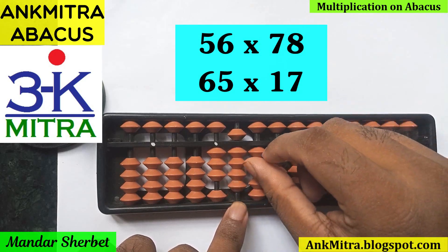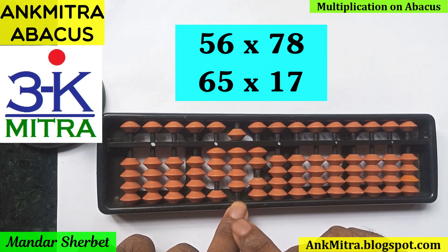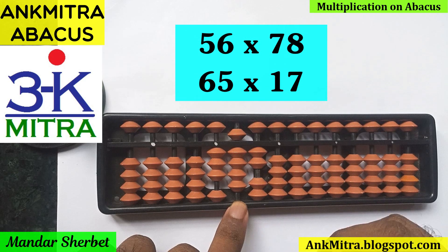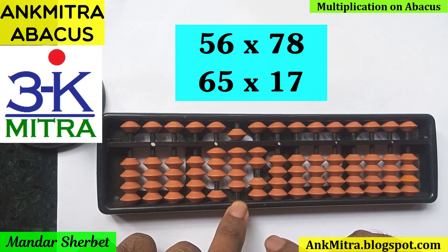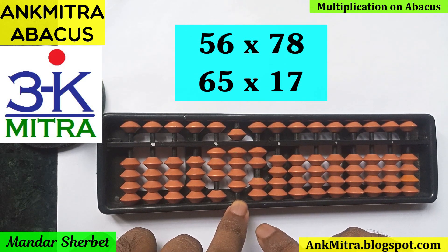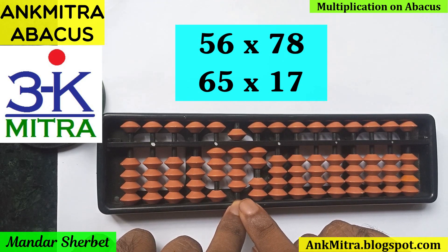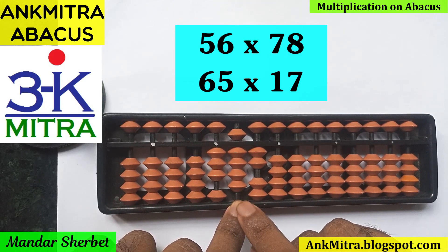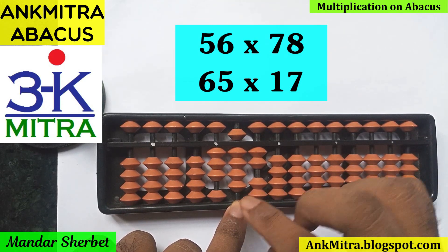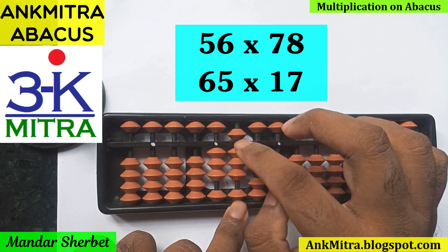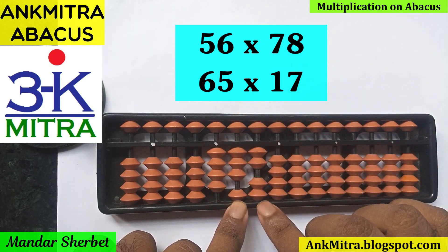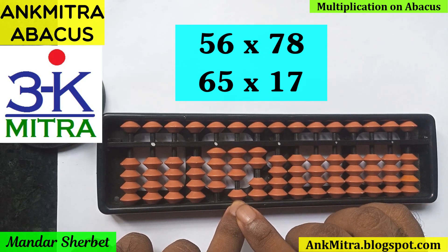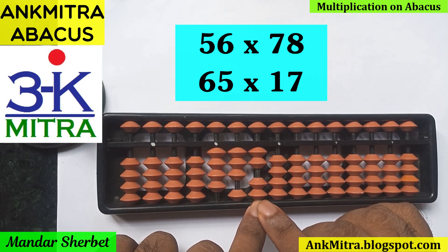The first part of the calculation is done. For the second part, the units place digit of 78 will be considered now. So 8 multiplied by 5 will start from this third rod. 8 multiplied by 5 is 40 — adding 4 on this rod will be done using minus 6 plus 10, and 0 to be added on this rod, so nothing else to be done here. Then we'll move one place to the right, that is to the second rod, for the final step.